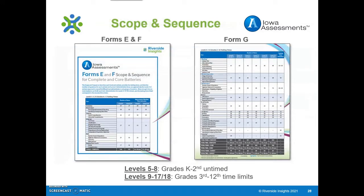We have scope and sequence documents available for the Iowa Assessments Complete, Core, and Survey Batteries, Forms E, F, and G for all levels. These documents state the number of items for each domain, the skills tested, and the approximate amount of time for testing. The Levels 5 through 8 assessments are untimed, while Levels 9 through 17-18 have associated time limits with each subtest.